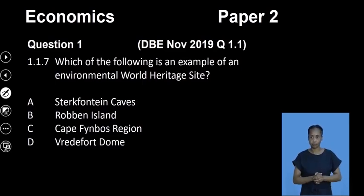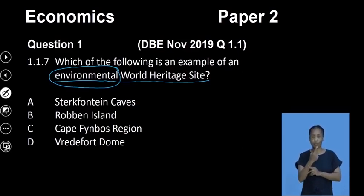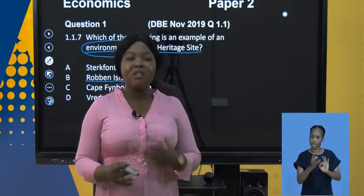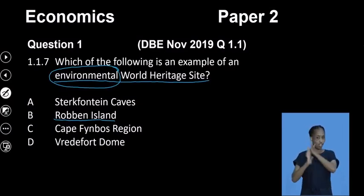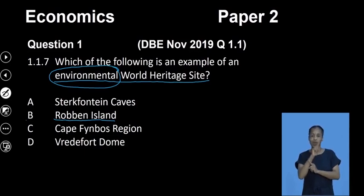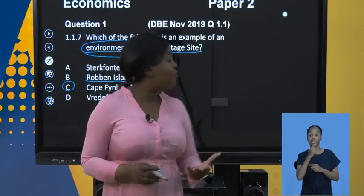Question 1.17: which of the following is an example of an environmental world heritage site? The keyword is environmental. Robben Island is not an environmental heritage site — it is significant historically, as it is where former president Nelson Mandela was held. Environmental world heritage sites deal with fauna and flora. Option A says Sterkfontein Caves. B says Robben Island. C says Cape Floral region. D says the Vredefort Dome. Our answer is C — the Cape Floral region, which has vast and significant fauna and flora.